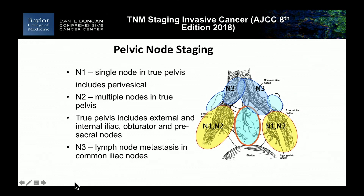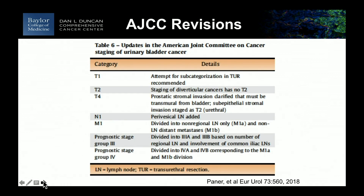The TNM system for adequate staging says you need to have more than 12 lymph nodes identified by the pathologist. My teaching point is: when you're doing this operation, it's an anatomic node dissection. You remove all of the primary lymph node drainage in the true pelvis — external, internal, and obturator down completely to the floor of the obturator fossa. And we're going to talk about the so-called extended node dissection.